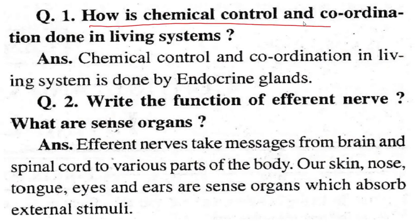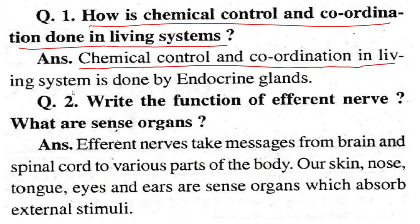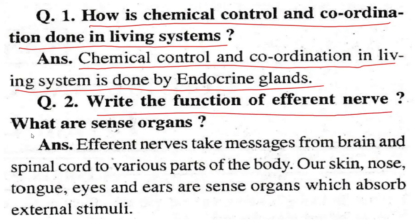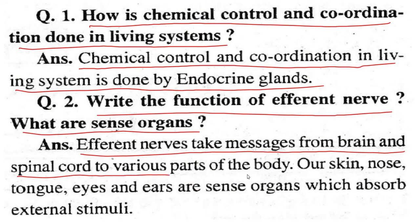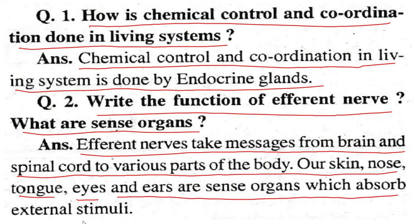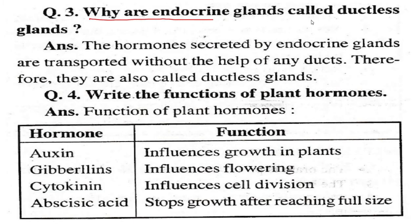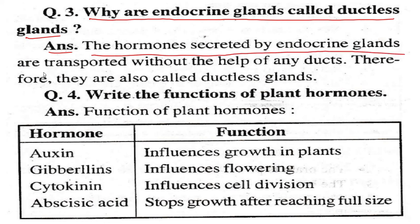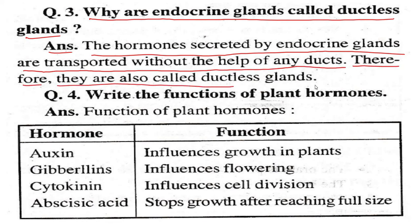Question: How is chemical control and coordination done in living systems? Answer: Chemical control and coordination in living systems is done by endocrine glands. Question: What is the function of efferent nerves and sense organs? Answer: Efferent nerves take messages from the brain and spinal cord to various parts of the body. Our skin, nose, tongue, eyes, and ears are the sense organs which absorb external stimuli. Question: Why are endocrine glands called ductless glands? Answer: The hormones secreted by endocrine glands are transported without the help of any ducts; therefore, they are called ductless glands.